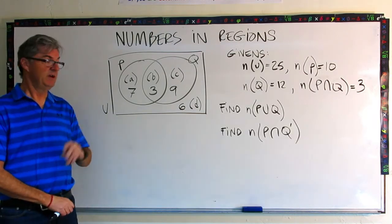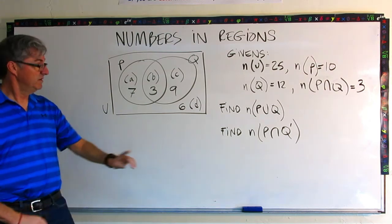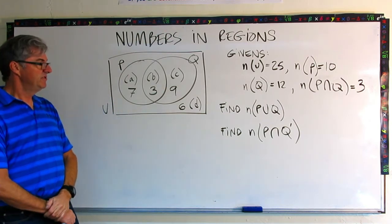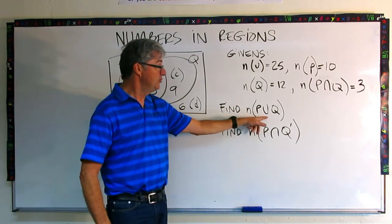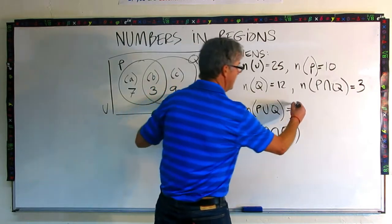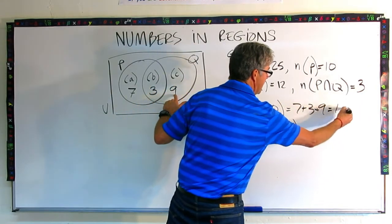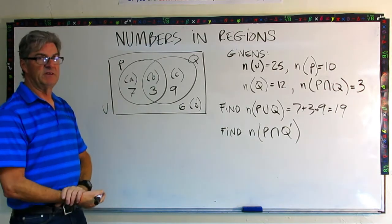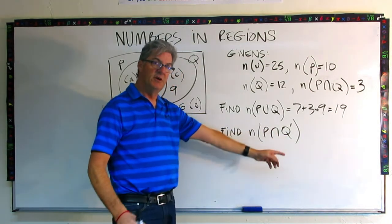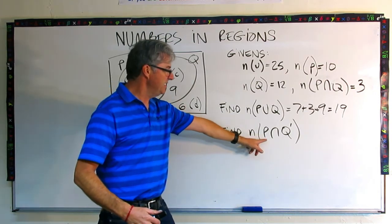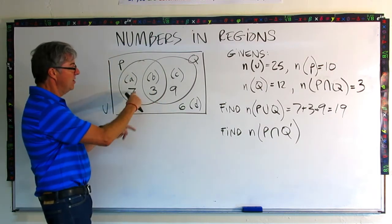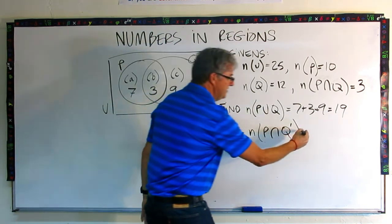Let's do two problems. If you're feeling bold, pause the video and analyze the notation to see if you can get them. The first is the number of elements in the union of P and Q — union is all elements in both sets — so that's 7 plus 3 plus 9, which is 19. The second is the number of elements in P intersected with the complement of Q, meaning everything in P that's not in Q. P has 10 elements total, but only 7 are not in Q, so the answer is 7.